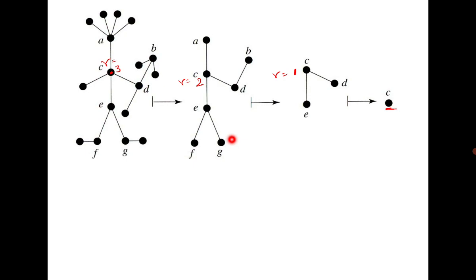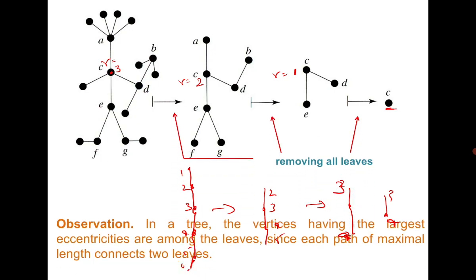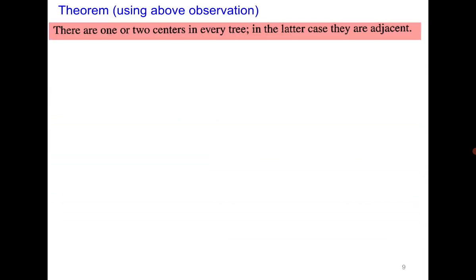In all the graphs, C is the vertex with minimum eccentricity corresponding to the radius. By deleting leaves we are essentially looking for the longest path — and for that path we delete the end vertices each time. For example, from a path 1 to 6, we delete 1 and 6, then 2 and 5, and in the end we are left with 3 and 4. So there are only two possibilities: we are left with exactly one vertex, or exactly two adjacent vertices.